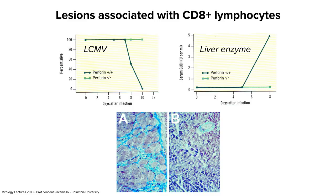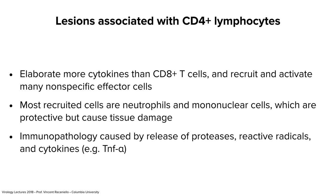Many virus infections lead to poxes and rashes, which are typically immune reactions — Th1 cells and macrophages come into the skin where viruses are replicating, make cytokines that permeabilize capillaries so T cells can come in, and all that makes the rash. The rash is an immunopathological reaction. That young child has a measles rash — every one of those red lesions is caused by immune responses to virus infection in the skin.